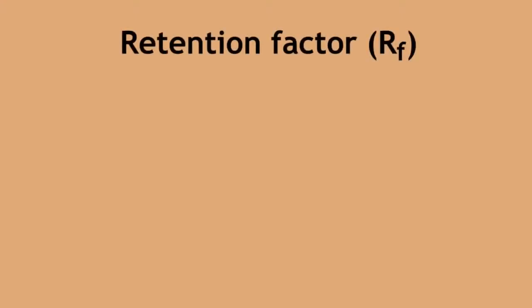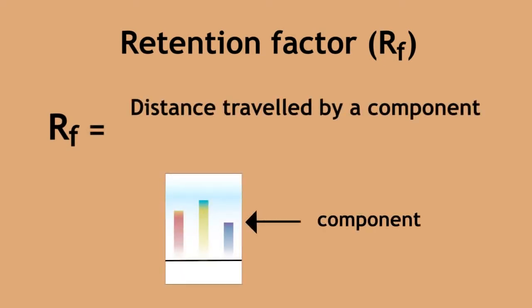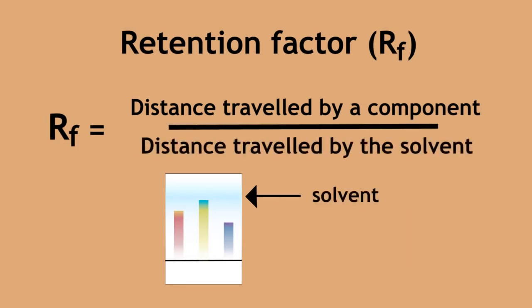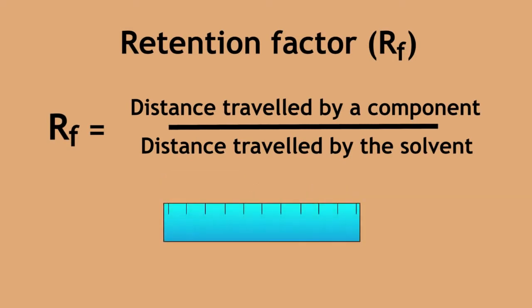The retention factor, or RF value, is a measure of the distance that a separated component has traveled compared to the distance that the solvent, in our example water, has traveled. These distances can be measured using a ruler.